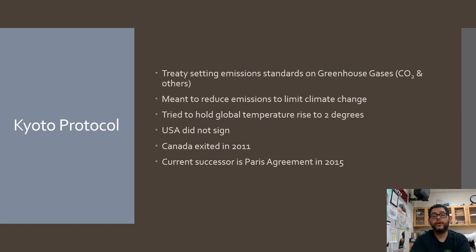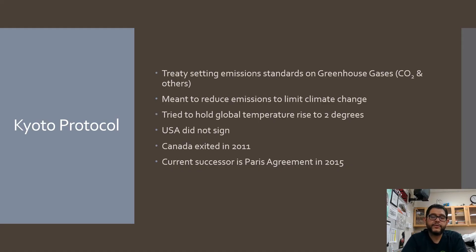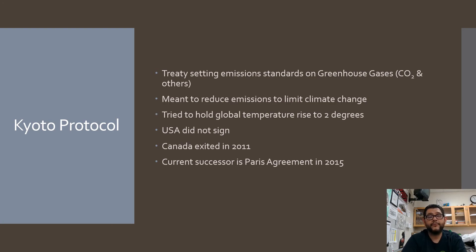Then we have the Kyoto Protocol. Many of you are probably familiar with the Paris Agreement of 2015 to bring down greenhouse gases — well, the Kyoto Protocol was the precursor to this, from the 1990s. This treaty set standards to bring down greenhouse gases like CO2 and methane to limit climate change. Unfortunately, the USA and Australia did not sign it, and Canada exited in 2011. Then in 2015, countries got back together in Paris and signed that agreement. You can use this as an example when talking about greenhouse gases.